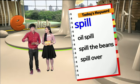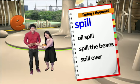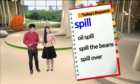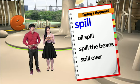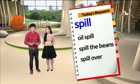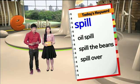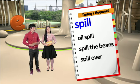뭔가 물을 따르고 있거나 주스를 따르고 있는데, 다른 데를 보고 있는 거예요. 주위가 분산돼서 딴 데를 보다가 흘러 넘칠 때 spill over라고 하는데, spill은 그냥 마시다가 아니면 기울여서 떨어뜨리는 거라면, spill over는 너무 가득 차서 넘쳐 흐르다 라는 말입니다. 좀 부정적인 의미로 씁니다. We just looked at a lot of useful expressions related to spill.